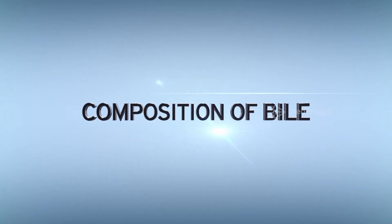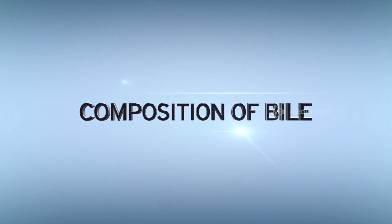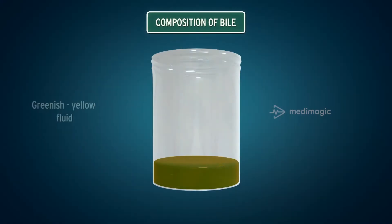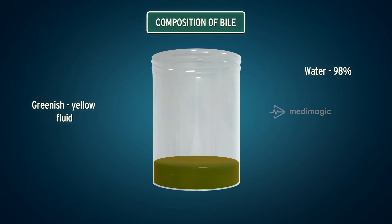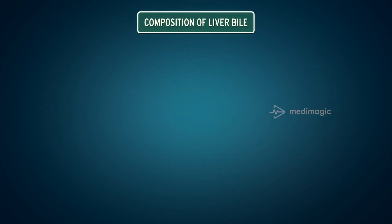Bile is a greenish-yellow fluid produced in the liver and stored in the gallbladder. It consists of water (98%) and solids containing primarily bile salts, bile pigments, and various ions.